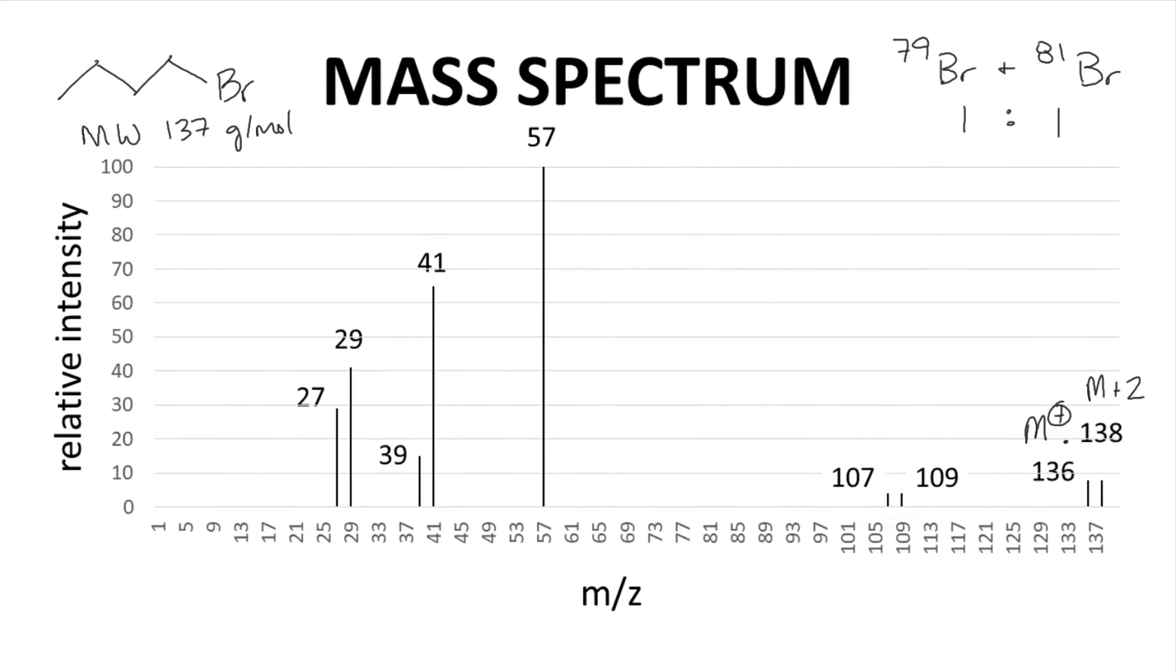These peaks would arise from loss of 29, an ethyl radical from the parent ion. This type of fragmentation is not easy to explain through a radical or charged site initiated mechanism. That's okay. Not all fragments arise from those two pathways.